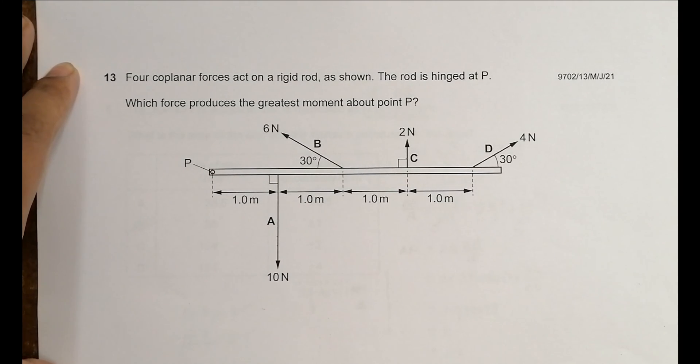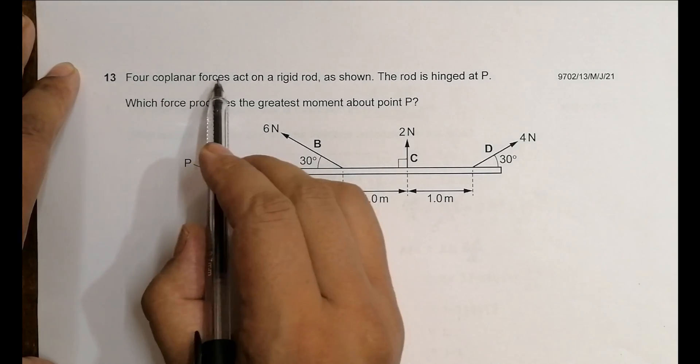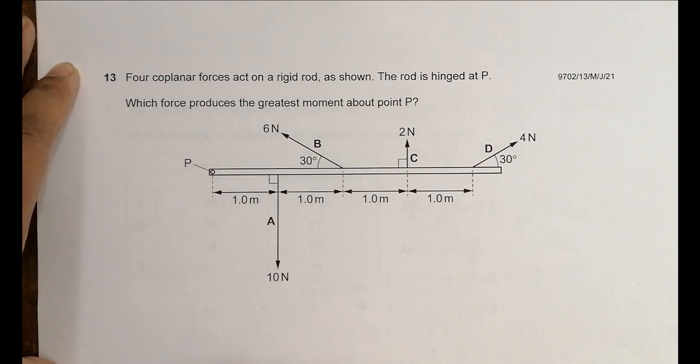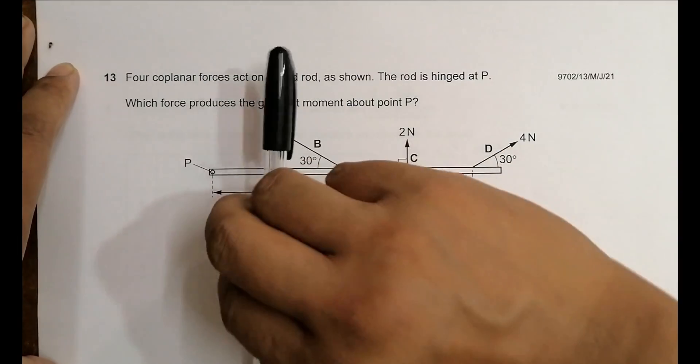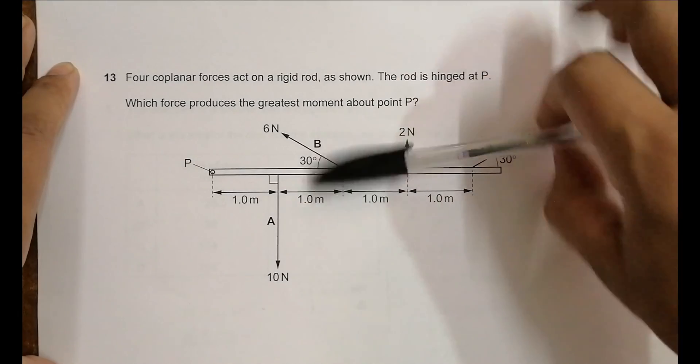It says four coplanar forces, meaning all the forces are on this plane surface - like this, like this, or like this. It is not like this, not coming out of the plane. So all the forces are on this plane surface.